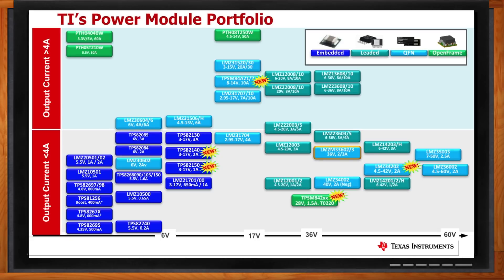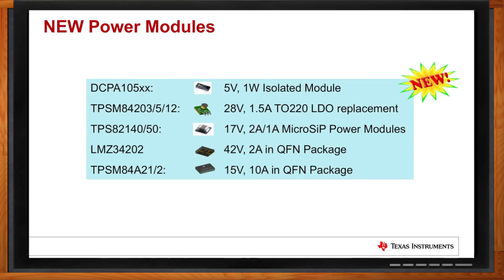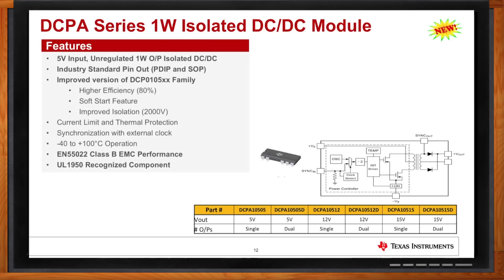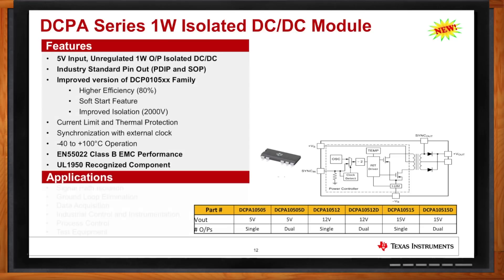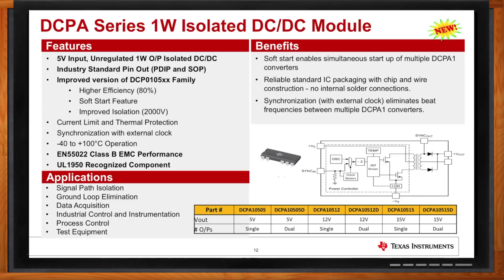TI has released five new devices over the last few months. The DCPA series is an isolated module — very low power — in an industry-standard pinout, for applications where you need to separate the output from the input with real isolation. It features an unregulated output voltage, up to 100V working voltage, and 2000V instantaneous isolation. It's great for systems where you need to isolate signal paths or isolate grounds.